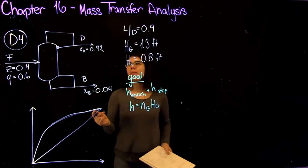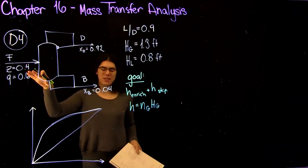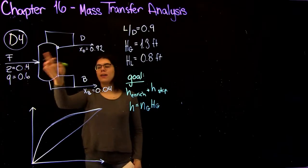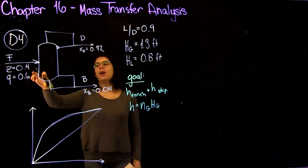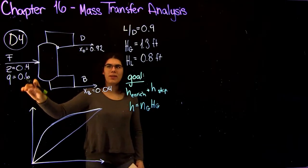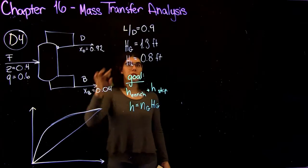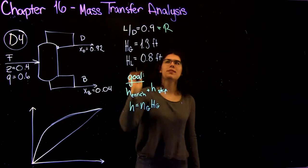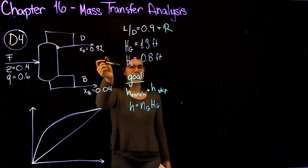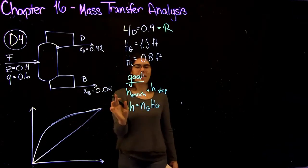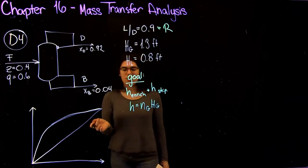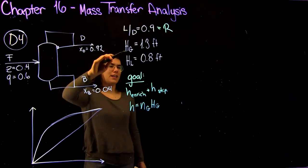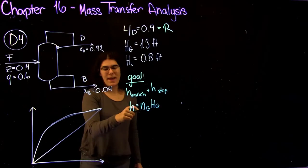The problem I'm going to be doing is from chapter 16 question D4. In this question we're given a simple column with one feed, a distillate and a bottoms. We're given the incoming feed composition, the quality of the feed, and the composition of the distillate and the bottoms. We're also given L over D, which is the same as our reflux ratio, our Hg and HL values. We're asked to find the heights of the enriching and the stripping sections. From before, H equals Ng times Hg, and we're given Hg, so our goal is going to be to find Ng.